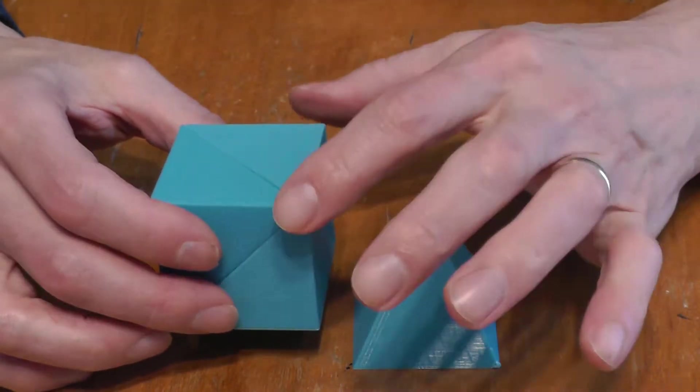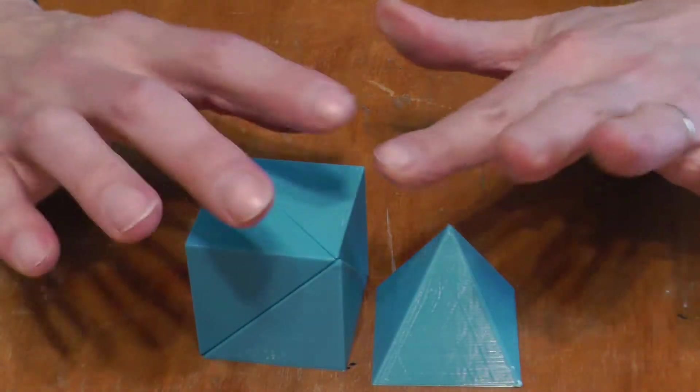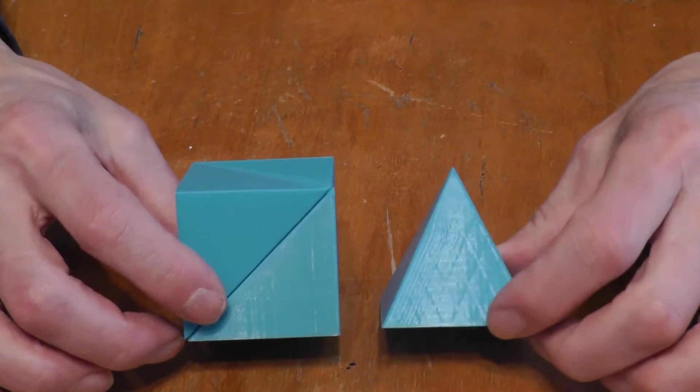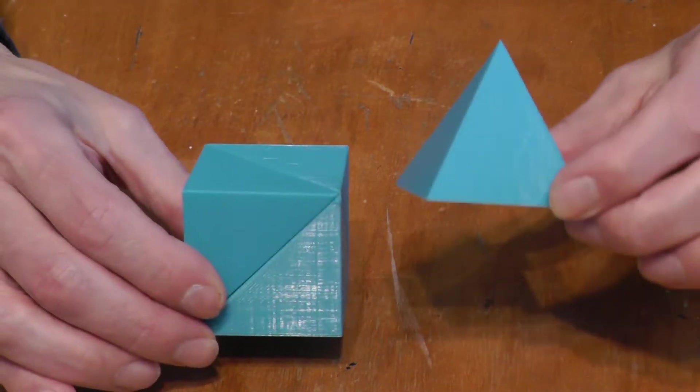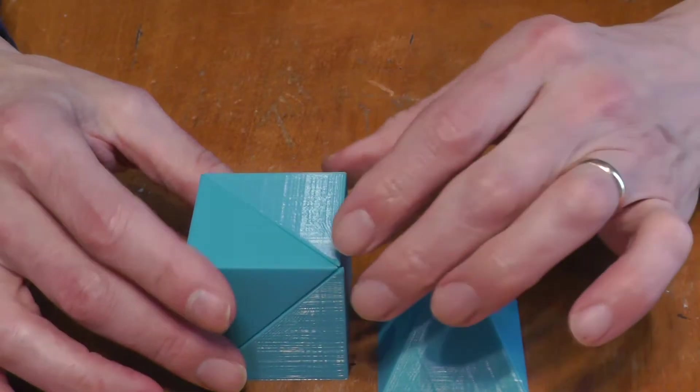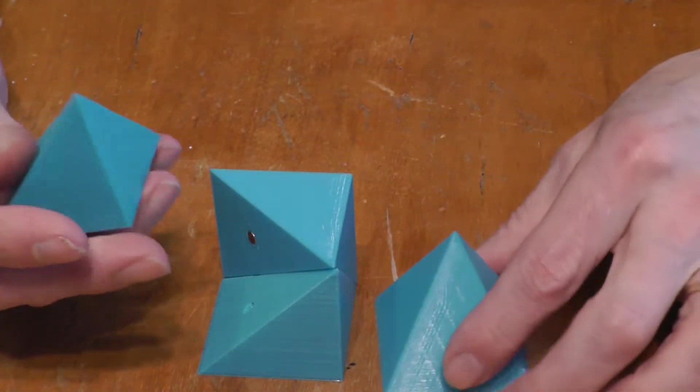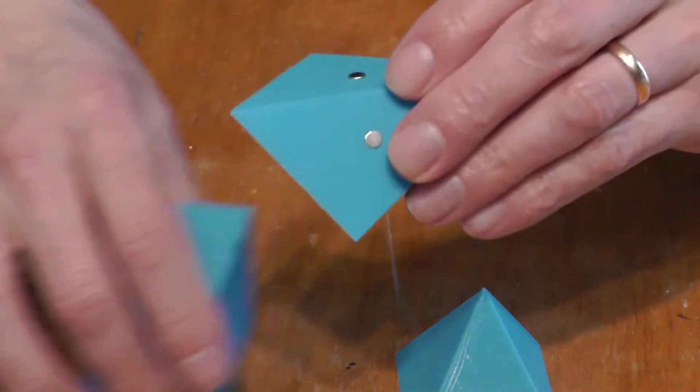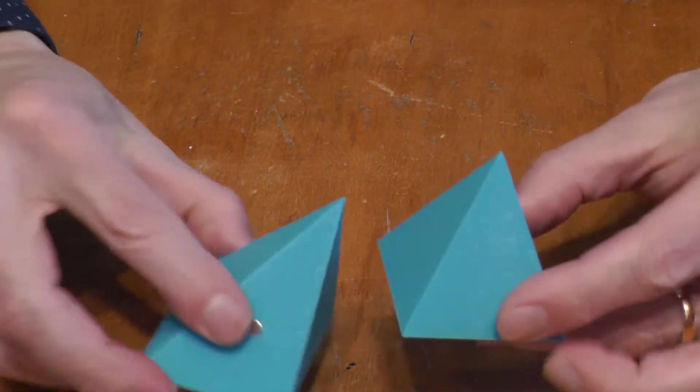This thing has the same base as the pyramid, same shape, and has the same height as the pyramid. So this should be three times as big as this, and the way I'm going to do that is by transforming a pyramid into this shape.